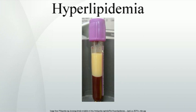Hyperlipoproteinemia Type I exists in several forms. Lipoprotein lipase deficiency is due to a deficiency of lipoprotein lipase or altered apolipoprotein C2, resulting in elevated chylomicrons — the particles that transfer fatty acids from the digestive tract to the liver. Type I hyperlipoproteinemia usually presents in childhood with eruptive xanthomas and abdominal colic. Complications include retinal vein occlusion, acute pancreatitis, steatosis and organomegaly, and lipemia retinalis.